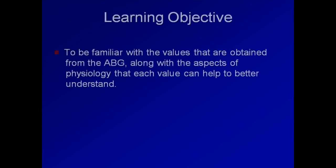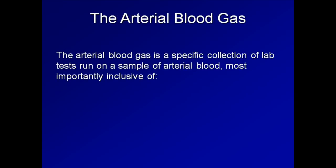The remainder of this lecture will give a very brief grand overview of the ABG. The learning objective is to be familiar with the values that are obtained from the ABG, along with aspects of physiology that each value can help to better understand. The arterial blood gas is a specific collection of lab tests run on a sample of arterial blood, which is most importantly inclusive of the arterial pH, the partial pressure of oxygen abbreviated PaO2, and the partial pressure of carbon dioxide abbreviated PaCO2.